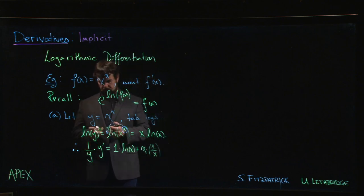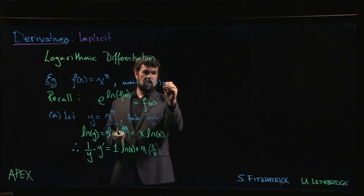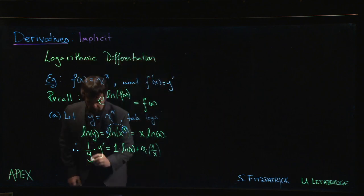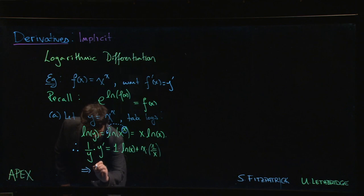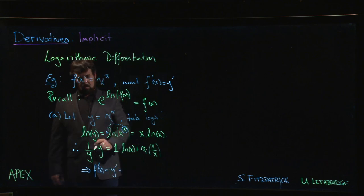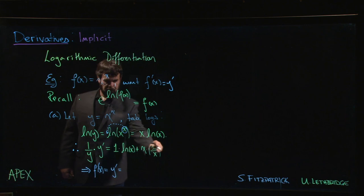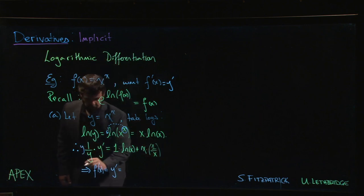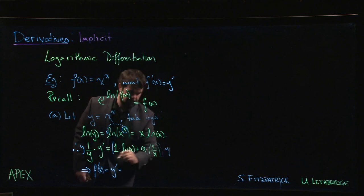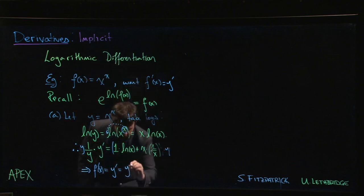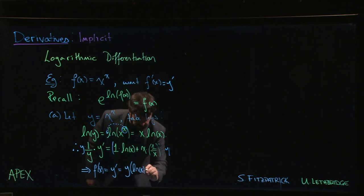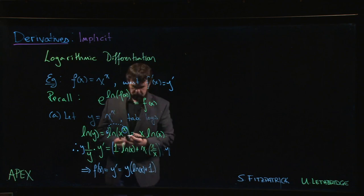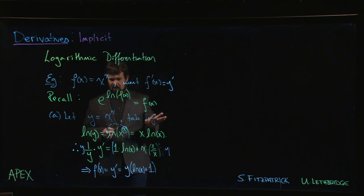So we're pretty much done. What are we trying to find? We want f prime. Well, that's our y prime. So f prime of x, which is y prime, is equal to—we've got that 1 over y out front, so we multiply both sides by y. We multiply by y, cancel the y out, so we have y times natural log of x plus 1 (the x's cancel).